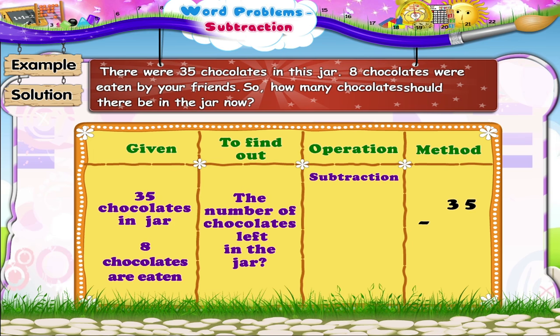We cannot subtract 8 units from 5 units, so we shall borrow one 10, that is 10 units. Now, on subtracting 8 units from 15 units, we get 7 units. Two 10s remain as it is. The answer is 27.